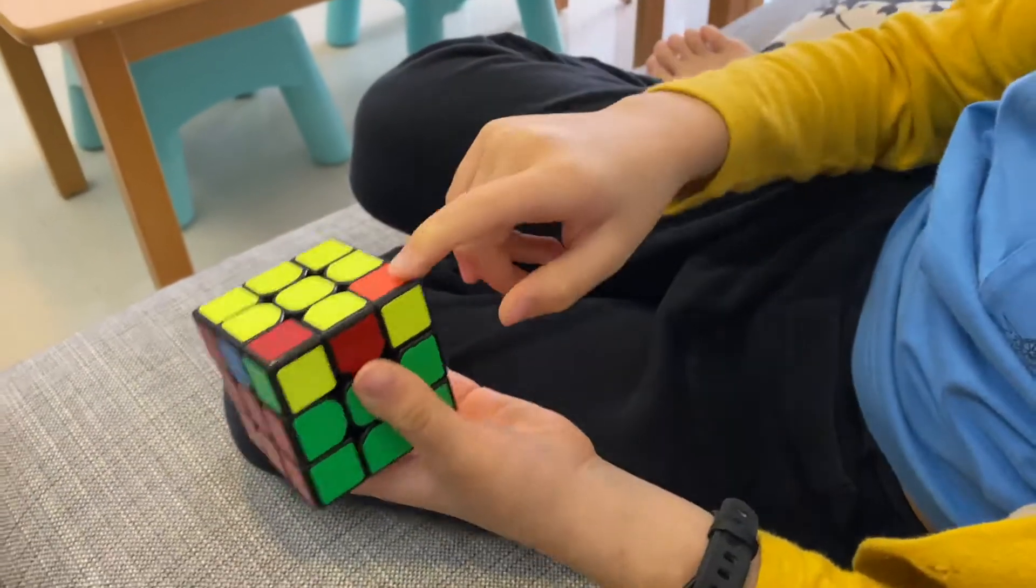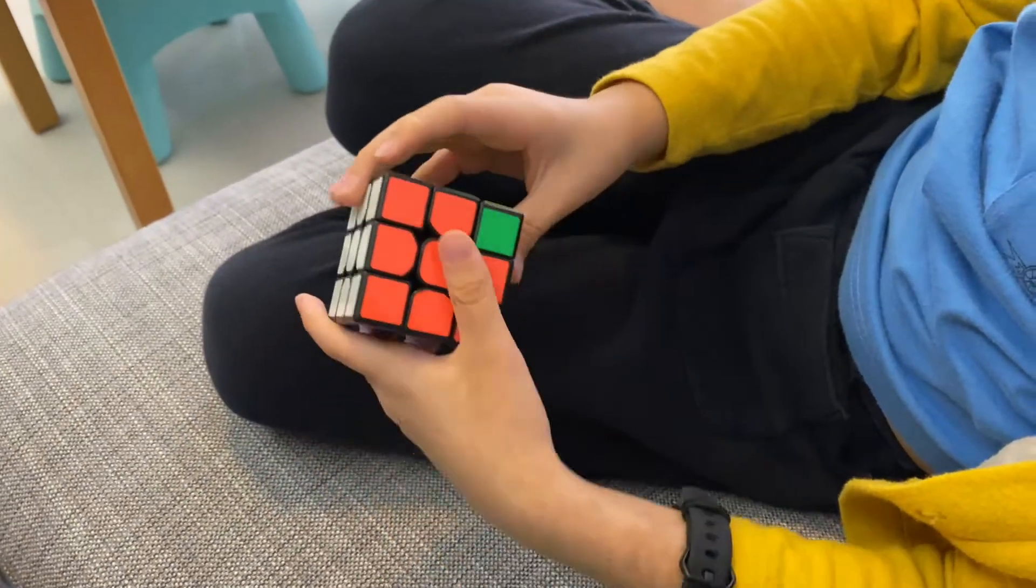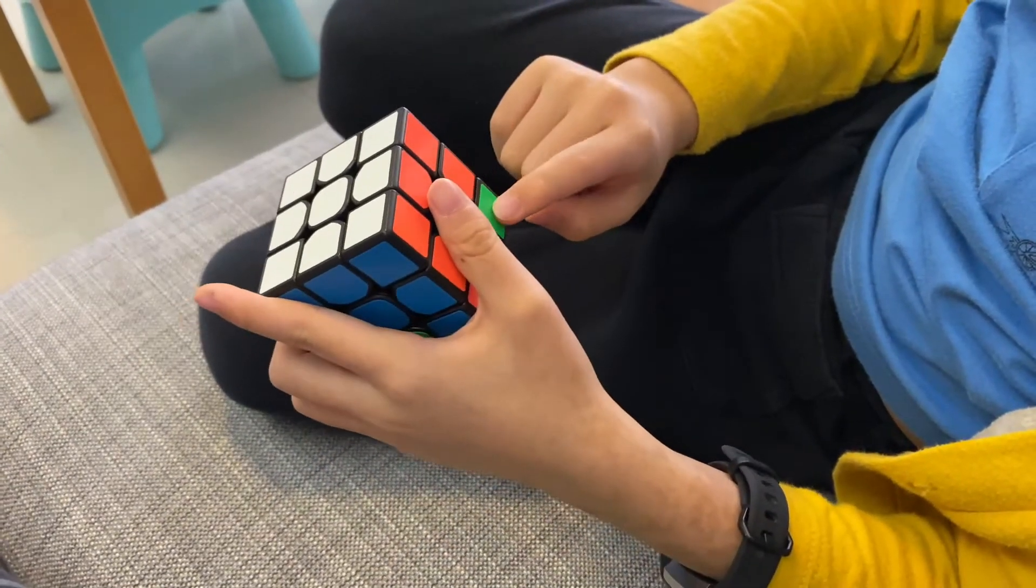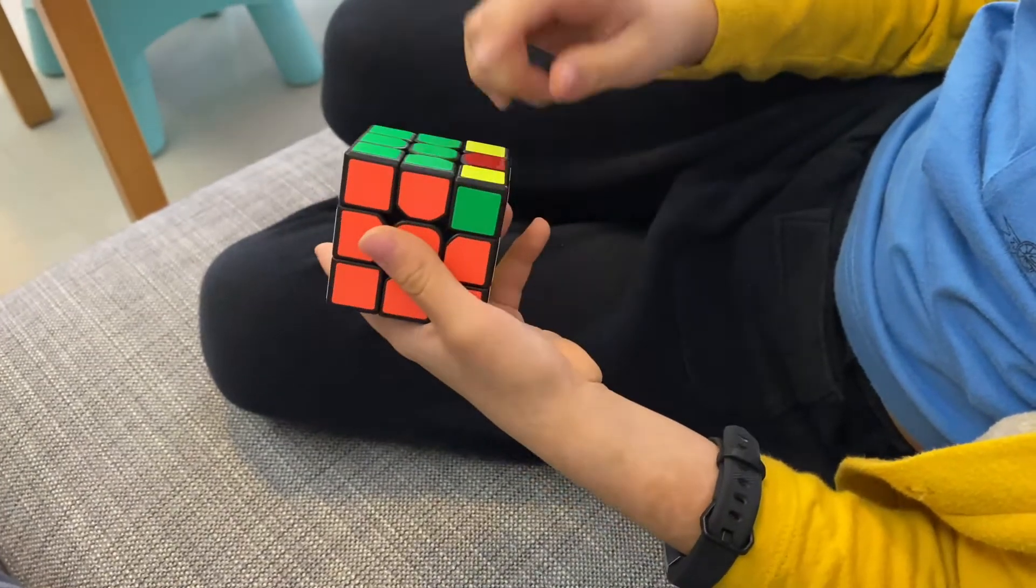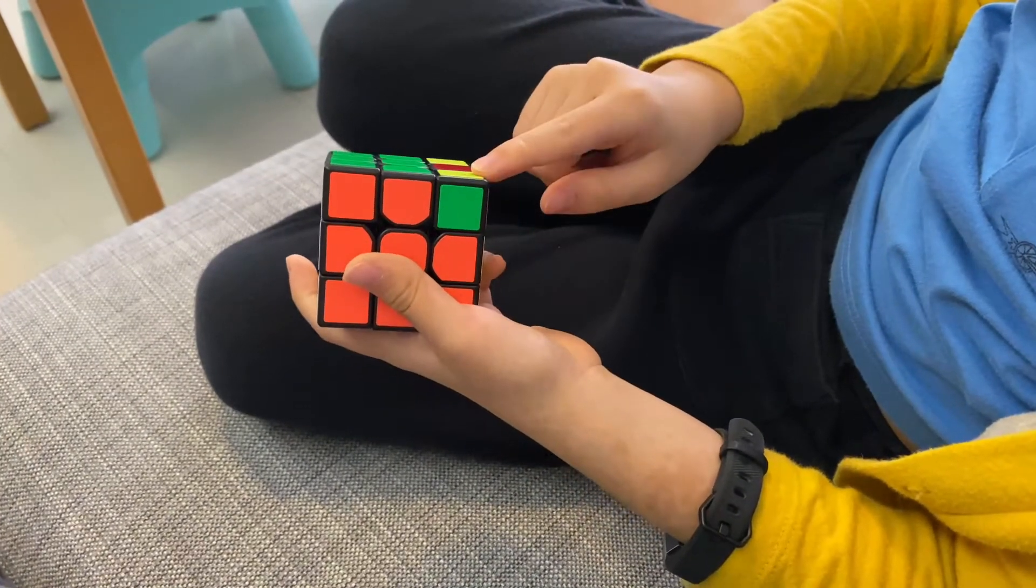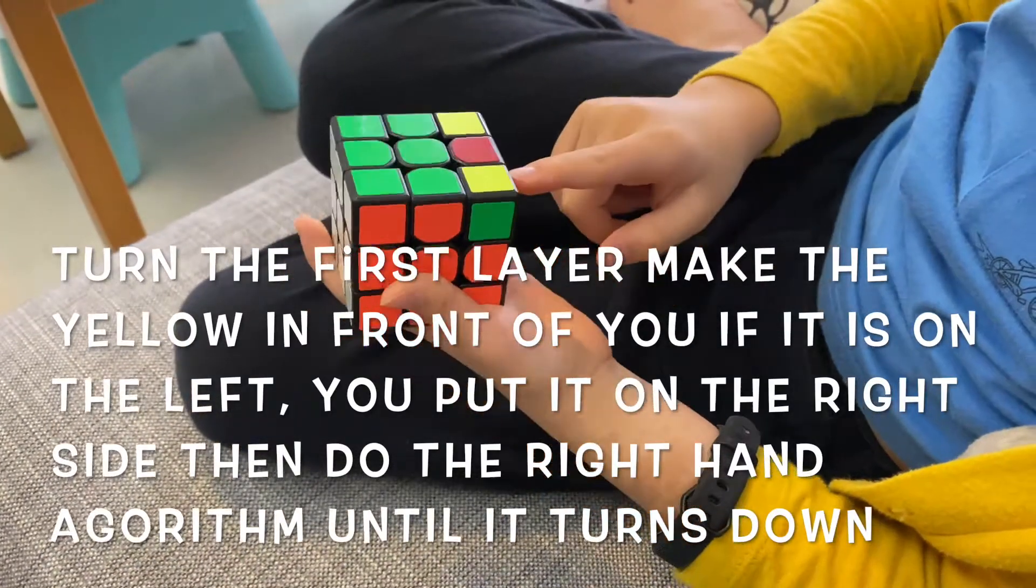So it doesn't matter if two are on the same side. But if it's on the left side, then you just do it on here. There's a yellow here. You see that? Now you can just do it on the right hand algorithm and like some, a few times.